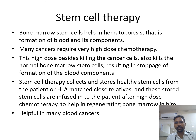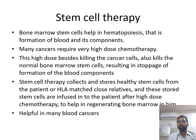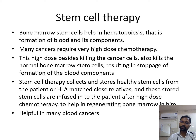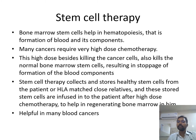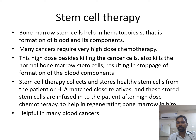In stem cell therapy, bone marrow stem cells help in hematopoiesis — the formation of blood and its components in the bone marrow. Many cancers require very high doses of chemotherapy, and this high-dose chemotherapy, besides killing cancer cells, also kills normal bone marrow stem cells, resulting in stoppage of blood component formation. Stem cell therapy collects and stores healthy stem cells from the patient or HLA-matched close relatives, and these stored stem cells are infused after high-dose chemotherapy to help regenerate the bone marrow, benefiting many blood cancers where high-dose chemotherapy is indicated.